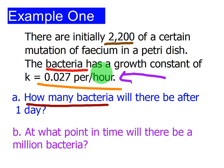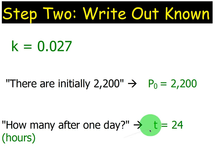Had it said 0.027 per day, then we would plug in just one. But because the rate is per hour, we need to convert a day to 24 hours, and therefore, T will be 24.